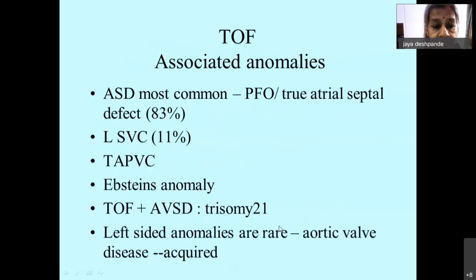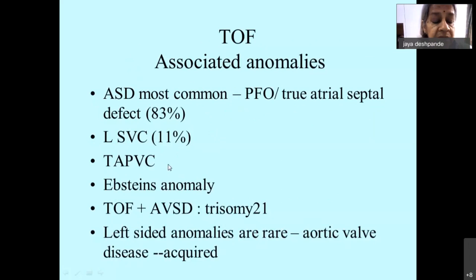Other associated anomalies: ASD is the most common, occurring in 53 percent of cases — sometimes people use the term pentology of Fallot. There can be left-sided SVC, total anomalous pulmonary venous connections, Ebstein's anomaly, and Fallot's with AV canal defect. Left-sided anomalies are rare; aortic valve disease found with Fallot's is generally acquired.